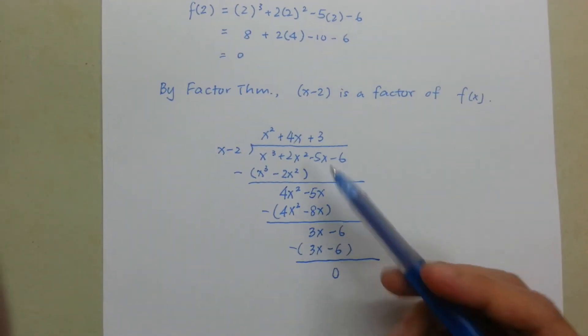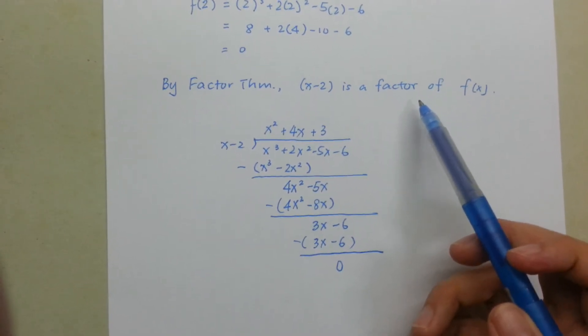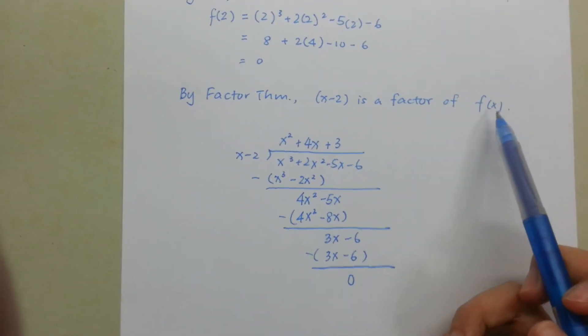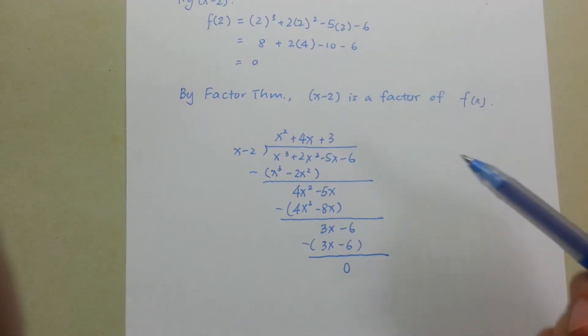Now you must get 0 because this is already proven to be a factor. Anything that is a factor of f(x) will divide f(x) exactly and leave no remainder.